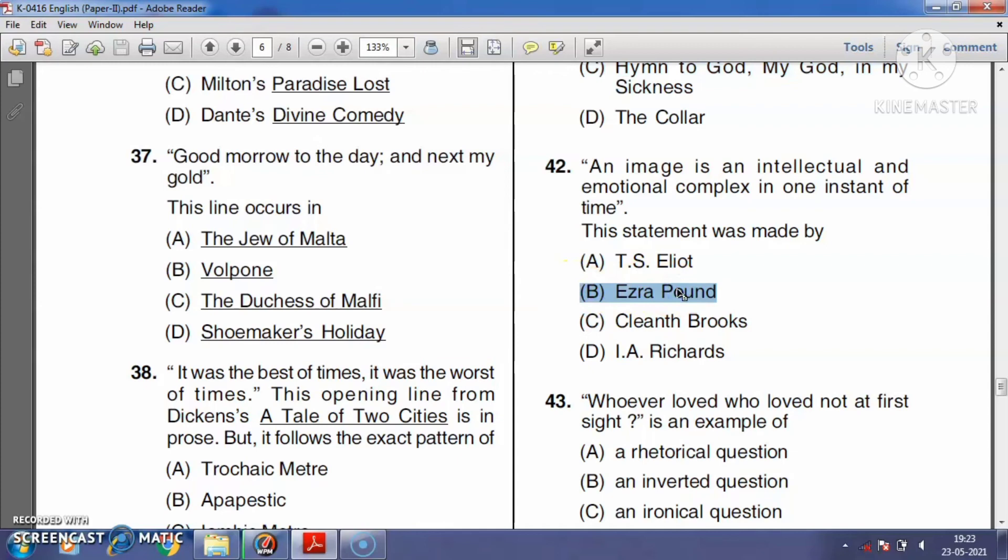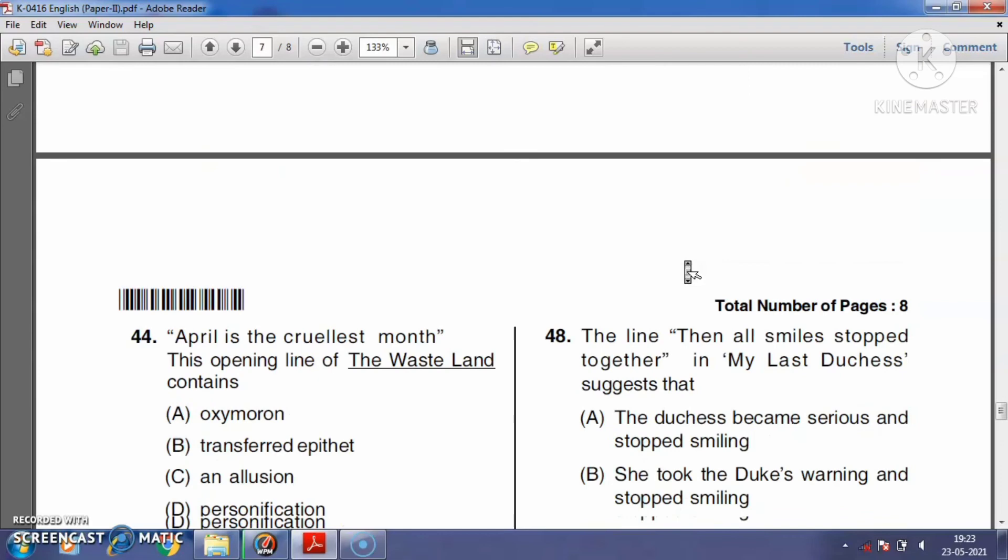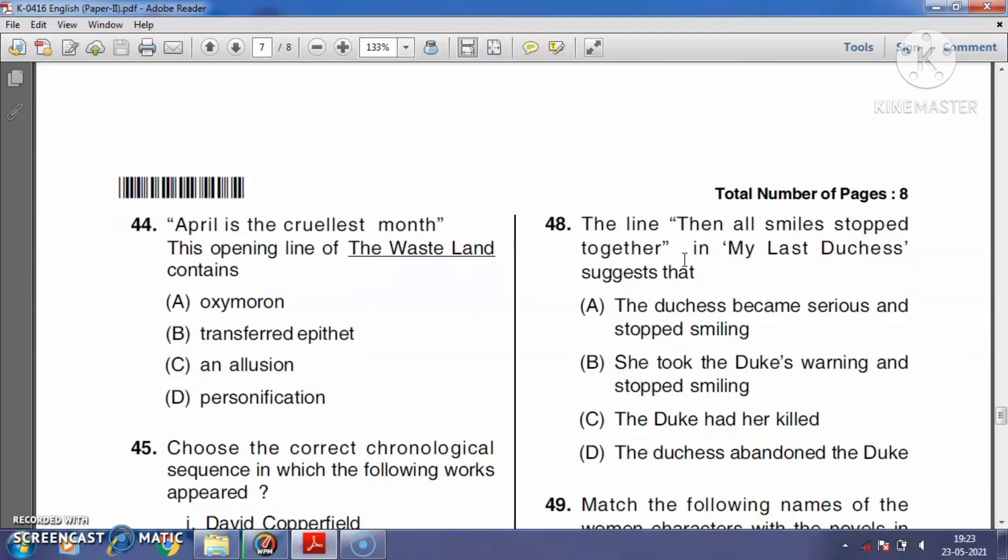Question number forty-three: 'Who ever loved that loved not at first sight?' is an example of a rhetorical question, an inverted question, an ironical question, or a paradox? The right answer is option A, rhetorical question. Question number forty-four: 'April is the cruelest month.' This opening line of The Waste Land contains oxymoron, transferred epithet, allusion, or personification? The right answer is allusion.